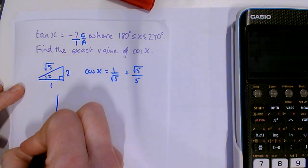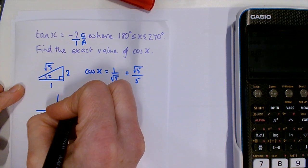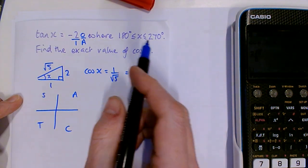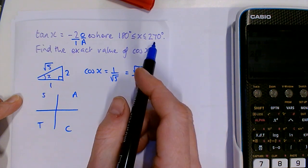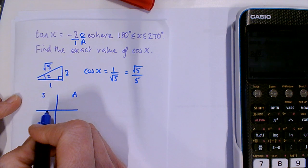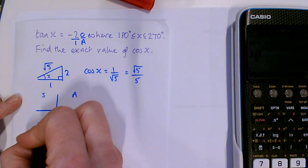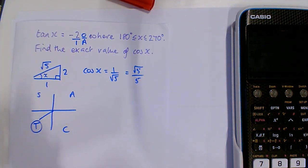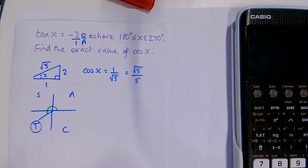So now we're going to sketch ourselves a CAST diagram. And we're going to go to the quadrant where we're between 180 and 270. So this is 0 to 90, 90 to 180, 180 to 270. So we're in here. So our angle would be this one around there.